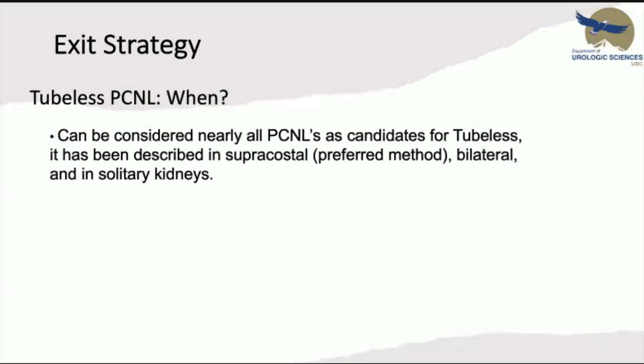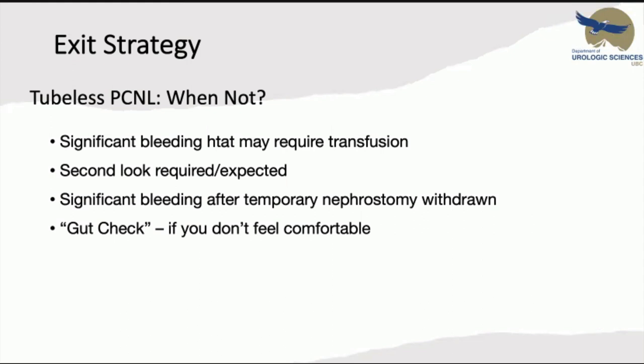Nearly all PCNLs can be considered as candidates for tubeless PCNL. It has even been described for supracostal access — preferred to prevent urinary leakage, pleural effusion, or pneumothorax — and in bilateral PCNL and solitary kidney. However, tubeless PCNL should not be done in cases of significant bleeding potentially requiring transfusion, when a second-look procedure is required or expected, significant bleeding after temporary nephrostomy withdrawal, or if the surgeon is not comfortable.